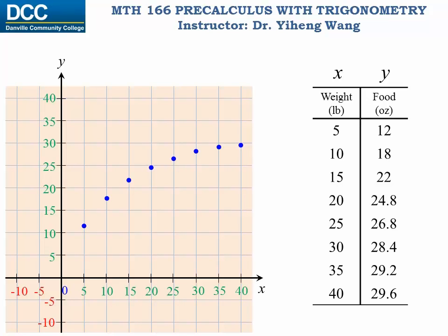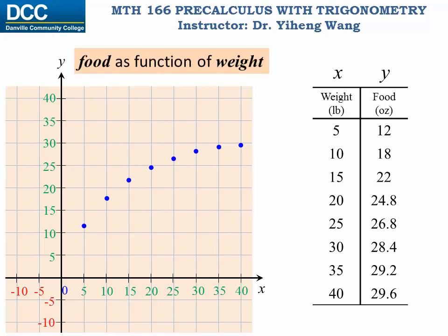In this case, the y variable — the output — is how much food he eats, and the x variable — the input — is his body weight. Therefore this function is food as a function of weight, which indicates that how much food he eats depends on his weight. In other words, this function explains that it is because my dog is gaining weight, therefore he is eating more and more food.